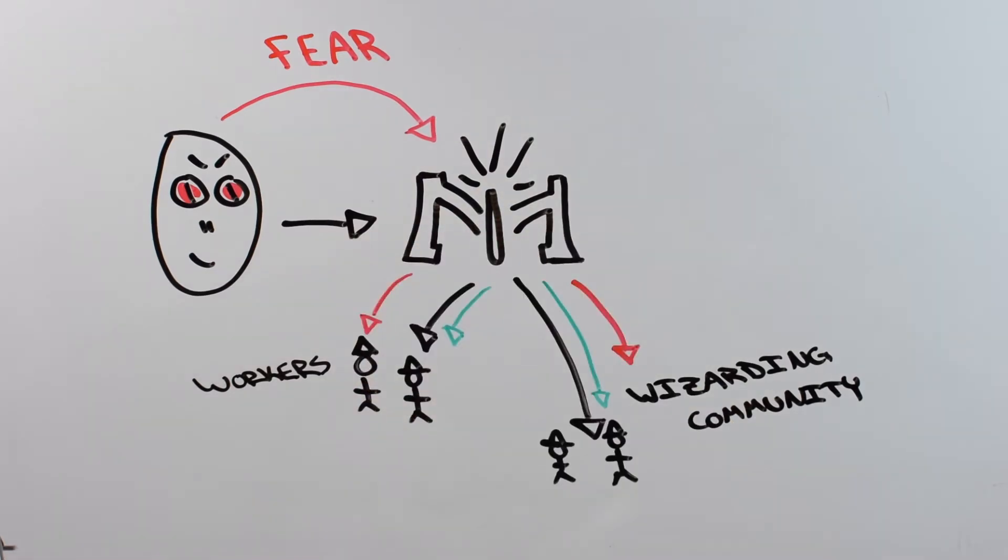So if we go back to HIV, the Ministry of Magic is like a cell. It already has the infrastructure. And the HIV is like Voldemort. It piggybacks on that infrastructure and uses it to create more virus.